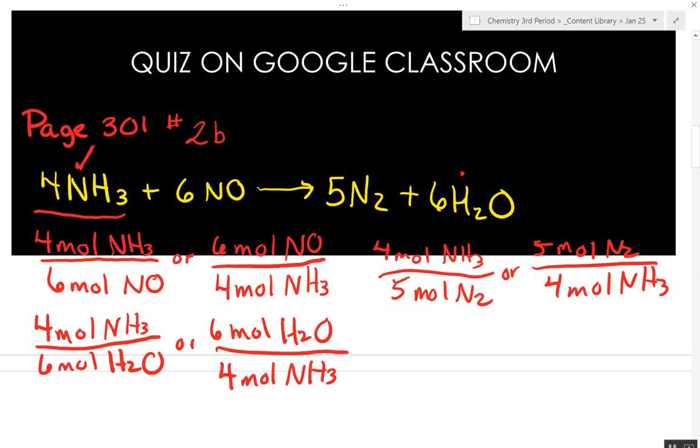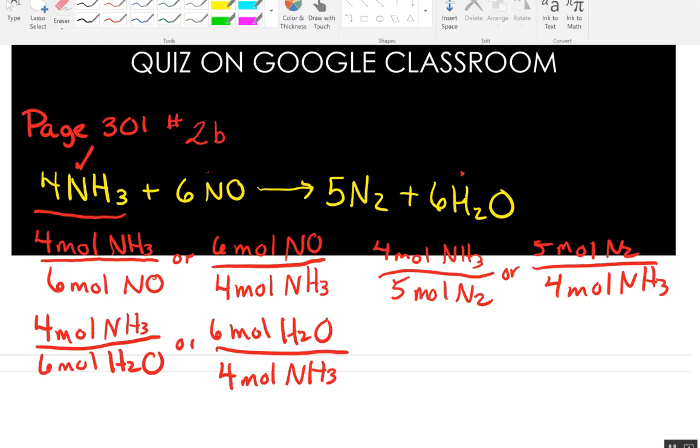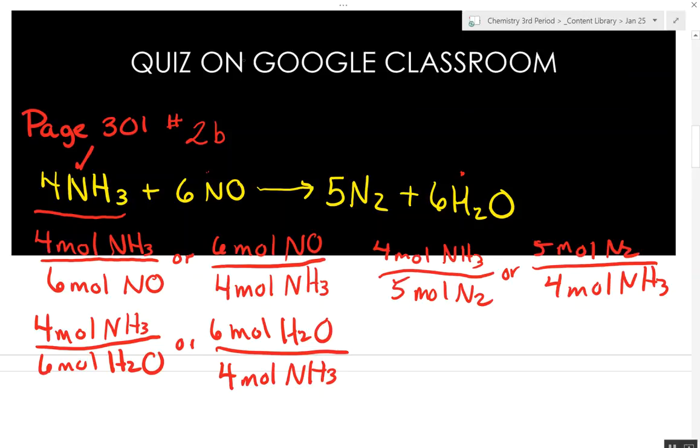So then I'm going to move over to the nitrogen monoxide. And I'm going to start with 6 moles of NO to 5 moles of nitrogen gas. I don't need to worry about this one, do I?